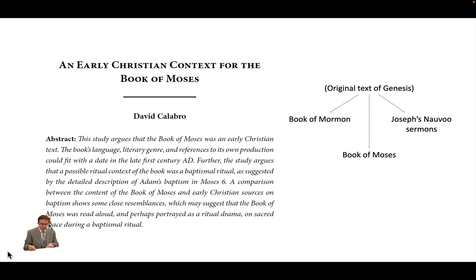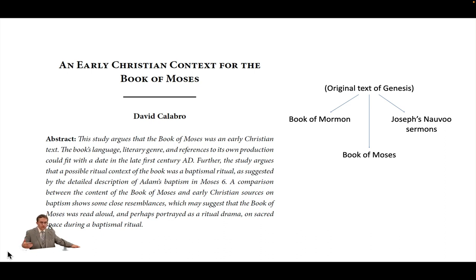Although the biblical descriptions of the priestly rites do not mention an accompanying liturgy, it is possible to imagine initiates participating in a temple drama reenacting the early chapters of Genesis. This drama would provide a mythological precedent for the rites of washing, clothing, anointing, setting apart by the laying on of hands, and animal sacrifice, by which rites the priest's consecration was rendered complete.